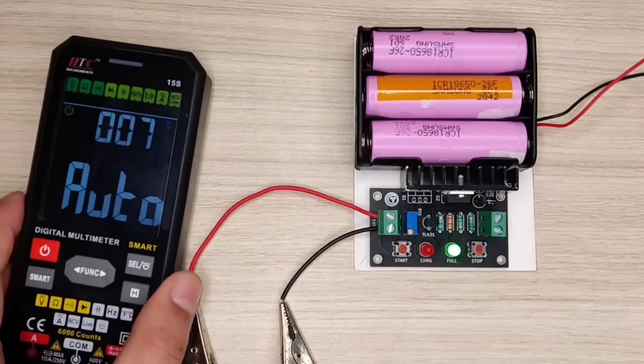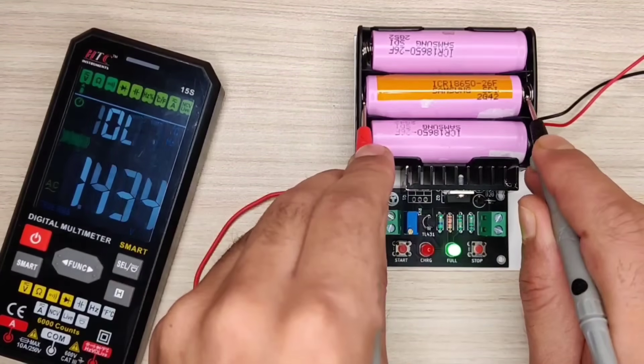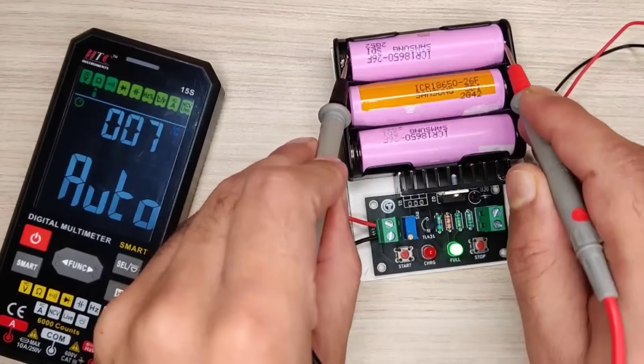Now let's check the voltage of all batteries. As you can see batteries are actually fully charged, and there is little voltage differences, as they are old used batteries.